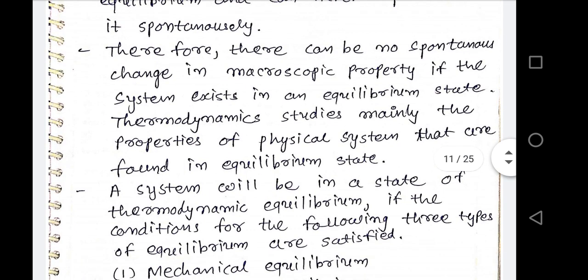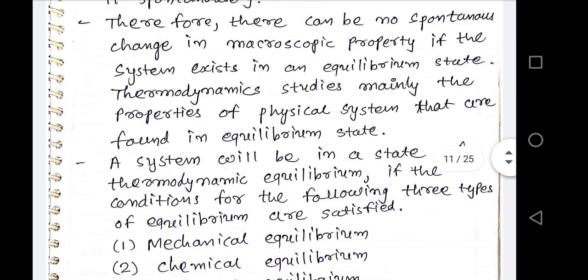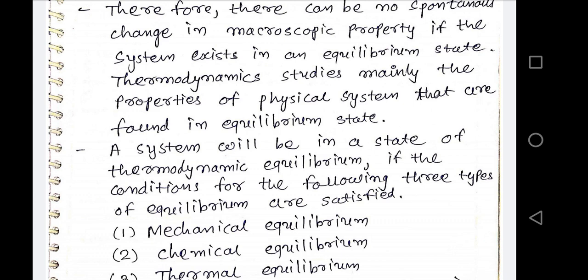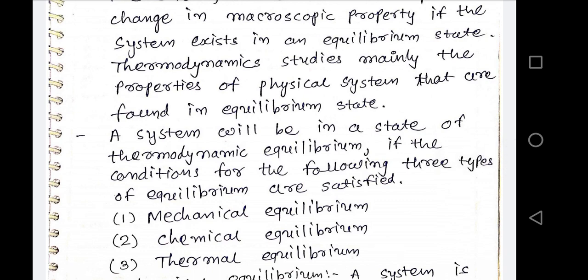There is no spontaneous change in any macroscopic property if the system exists in an equilibrium state. Thermodynamics mainly studies properties of physical systems found in equilibrium states. There are three types of equilibrium: mechanical, chemical, and thermal equilibrium. If any system fulfills all three types of equilibrium conditions, the system is also in thermodynamic equilibrium.